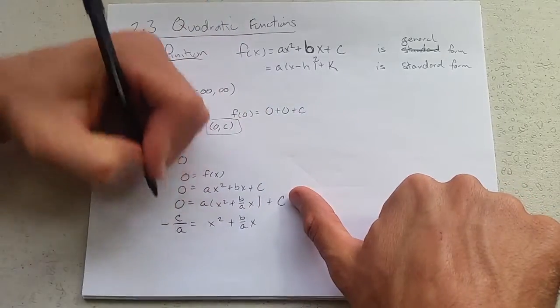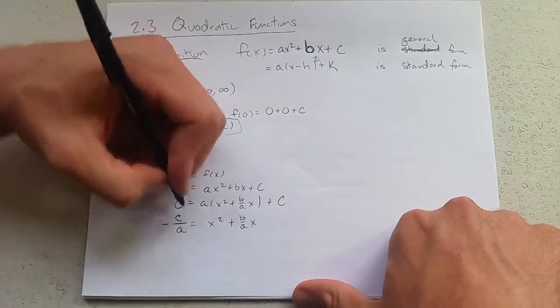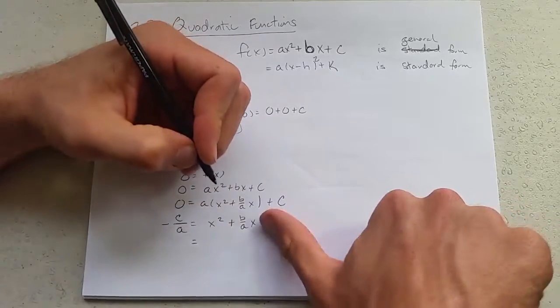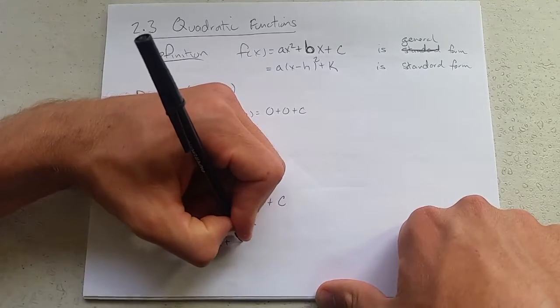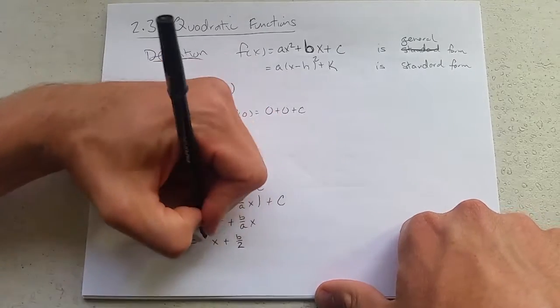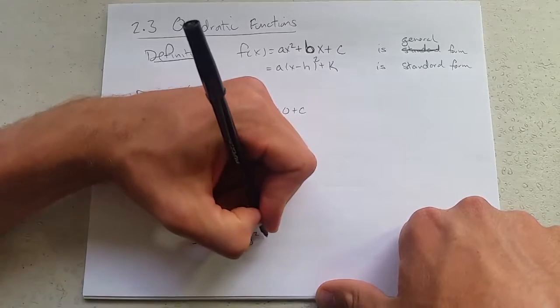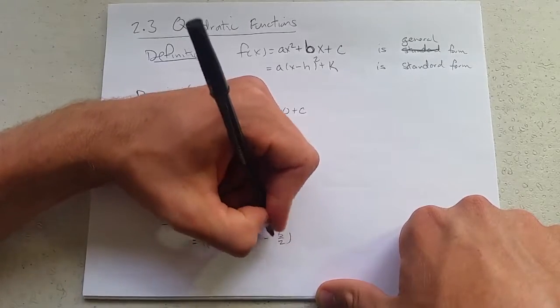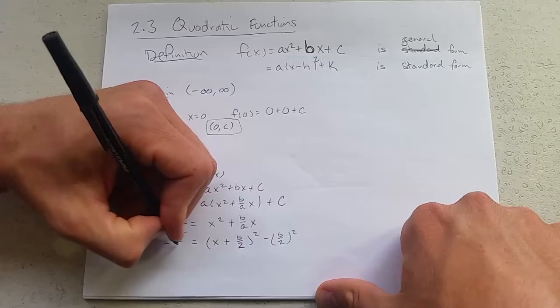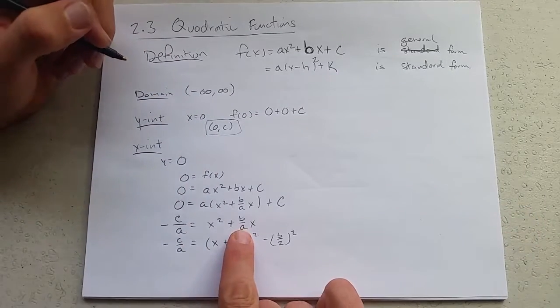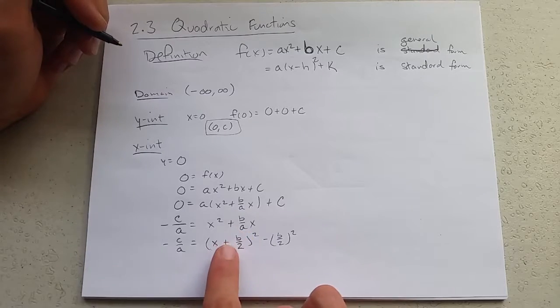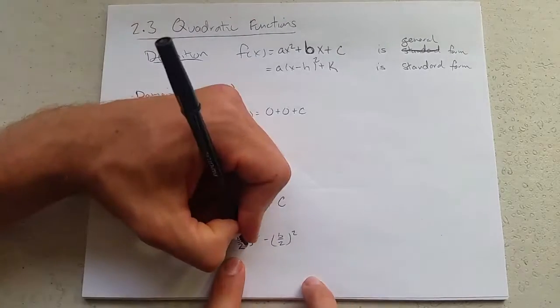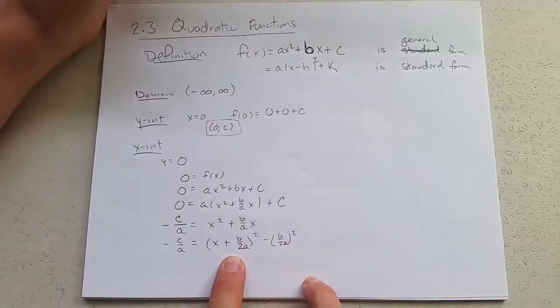Now we're actually going to complete the square here. What do we get? We take half of the x coefficient, b over a. Half of that is b over 2a.